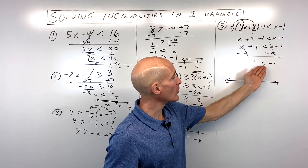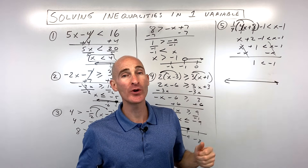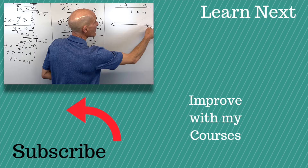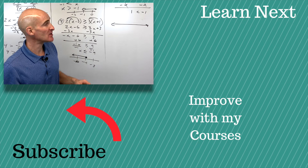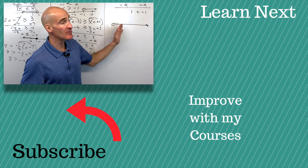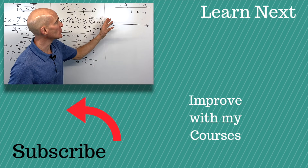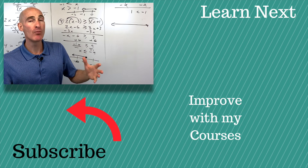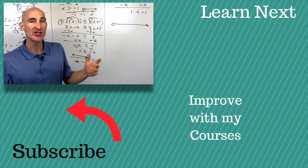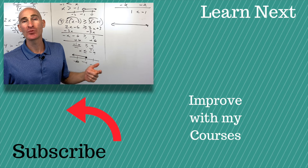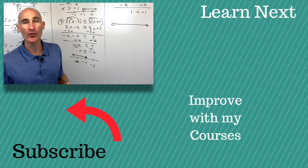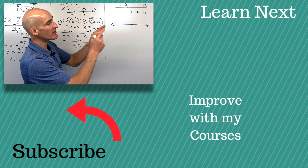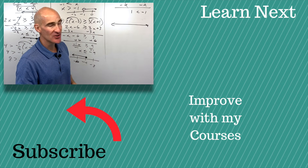If it was the other way — where 1 was greater than negative 1 — that's always true, and it would be all real numbers. You could shade the entire number line because it's infinitely many solutions. These are special cases when the variable cancels out. If you want to see more pre-algebra topics, check out my giant pre-algebra review where I go through inequalities as well as a lot of other pre-algebra concepts.